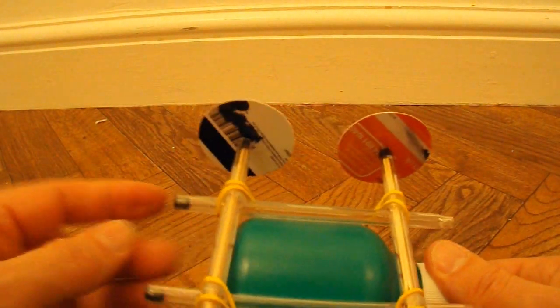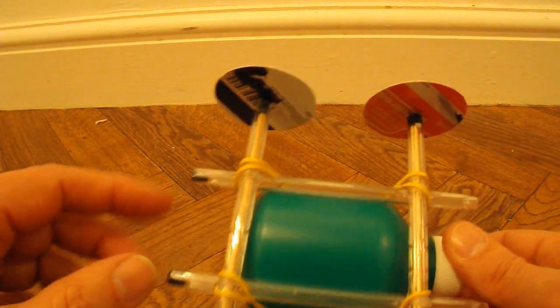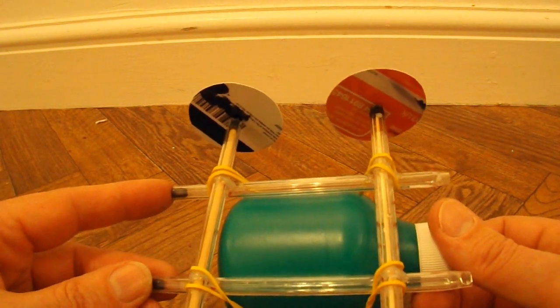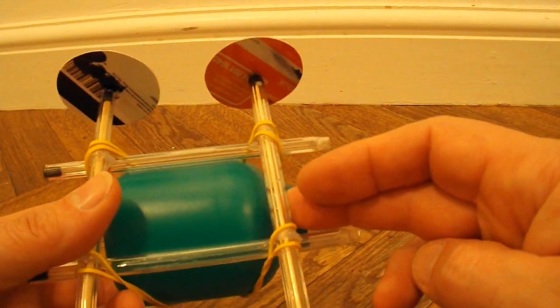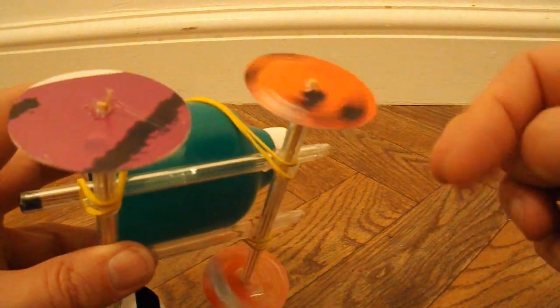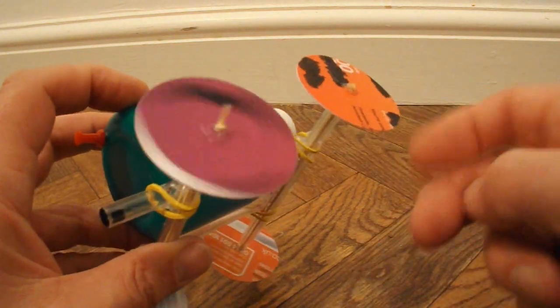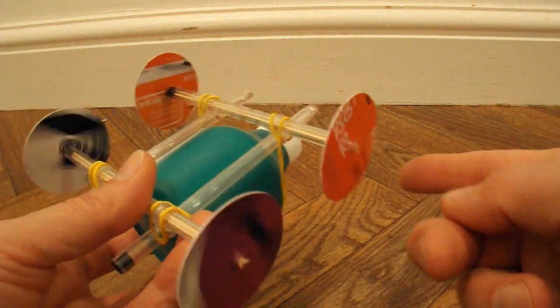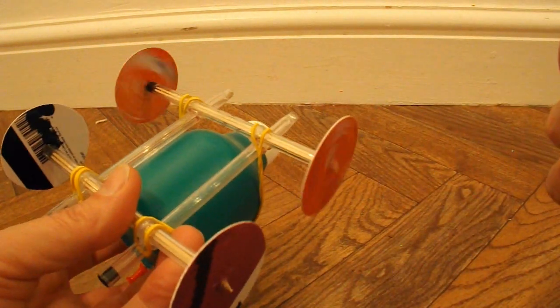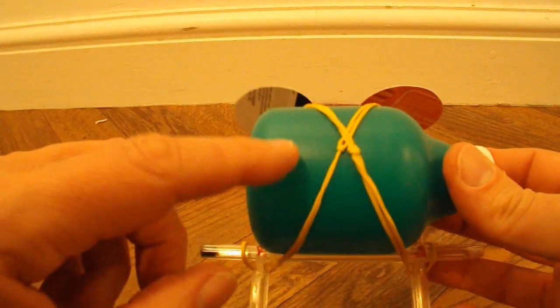The chassis is made out of four ball pen tubes hot glued together. The axles are barbecue skewers. And the wheels are made out of plastic store cards or credit cards or whatever you want to call them. And the bottle's held to the chassis with some rubber bands.